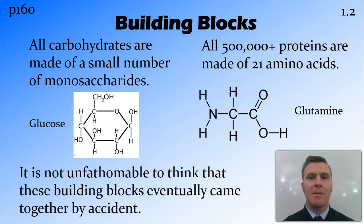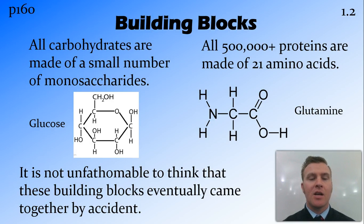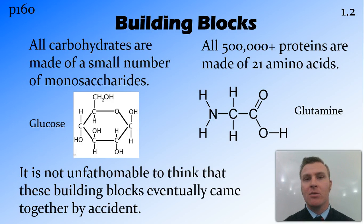These four very important chemicals for life are all made up of quite simple building blocks. For example, all the different carbohydrates are made up of only a small number of monosaccharides, whilst all of the 500,000 or so proteins found inside the body are made up of only 21 amino acids. Here's an example of a monosaccharide, glucose, as well as an amino acid, glutamine. Glucose only has 24 atoms in it, while glutamine only has 10. So it's not crazy to think that in about a billion years, these atoms already floating around in the atmosphere and dissolved in the ocean didn't bump into each other and happen to bond in this particular way — quite possibly forming early amino acids and carbohydrates by accident.